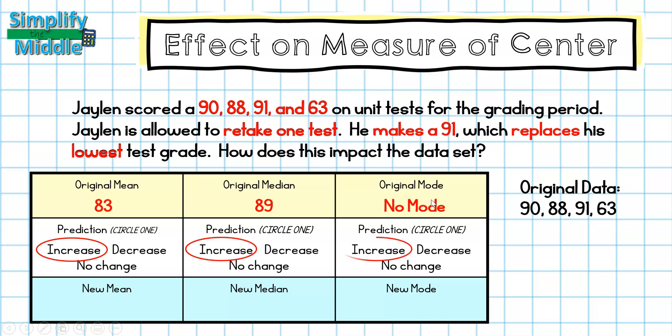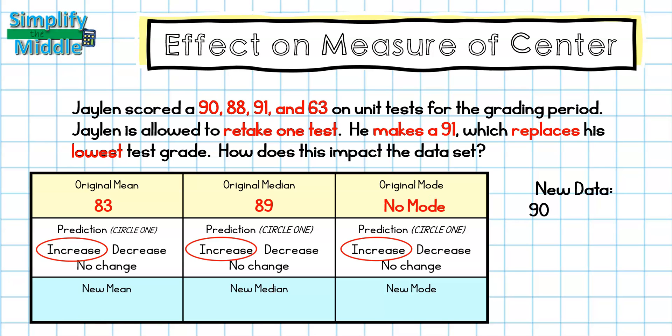I know my mode will change because the new 91 matches the existing 91, so I would actually have a mode for this data set. Let's see if our predictions are correct.